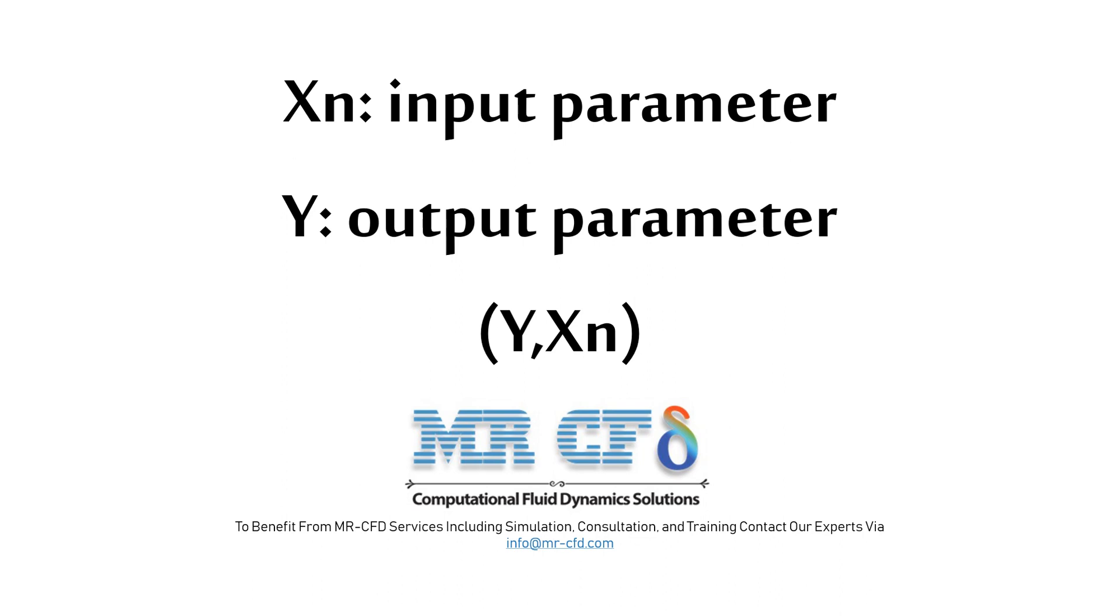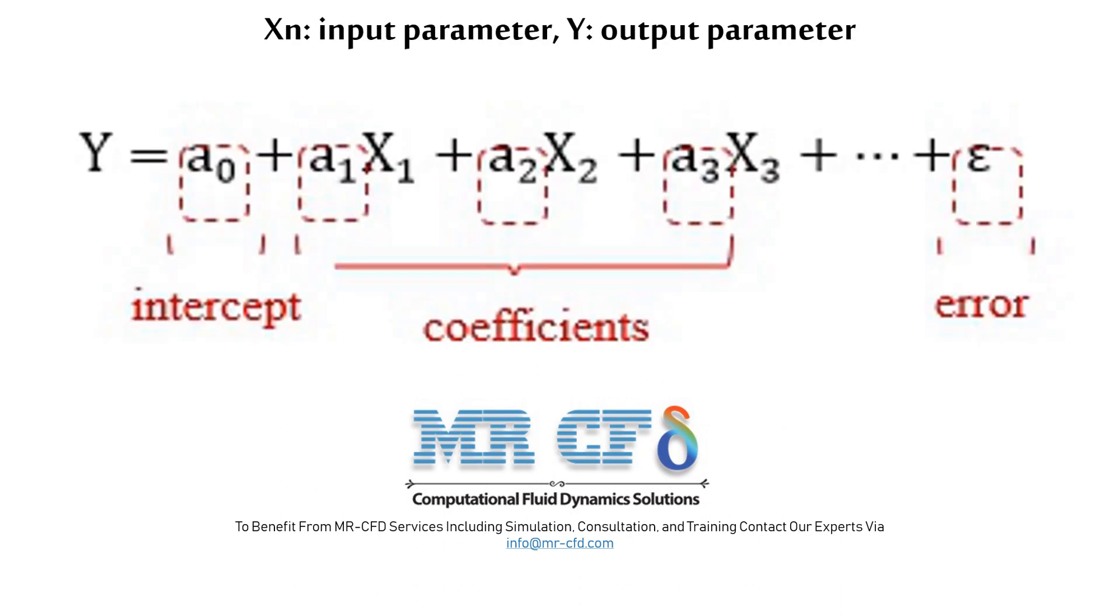Therefore, a linear regression equation must be estimated to predict the value of a dependent variable based on change in one or more independent variables. If the variable Y is assumed to be based on the change in each of the input variables X, this equation is obtained.